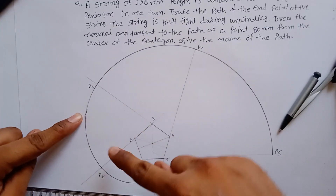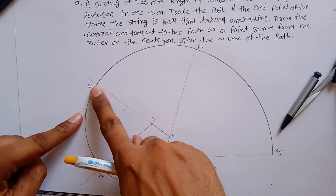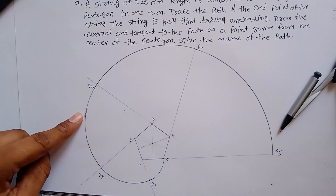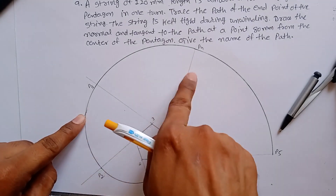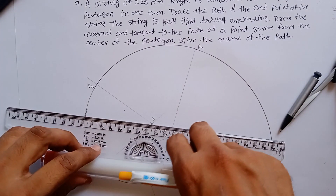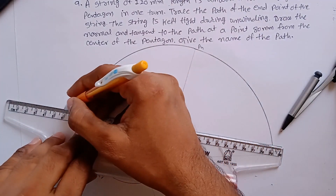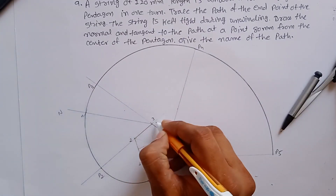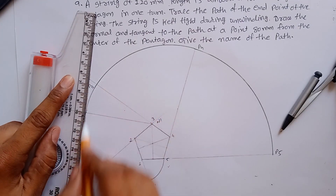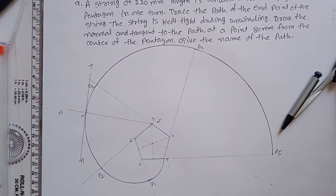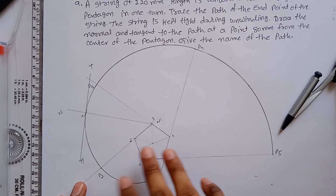This point is in between P2 and P3. If this point were on P4 and P5, the whole process would be different. Since it is between P2 and P3, join this point with vertex 3. Call this point M, and join M with 3 — this line gives you the normal N-dash. Now draw a perpendicular line passing through this point and perpendicular to the normal, which gives you the tangent. This path is known as the involute of the pentagon.